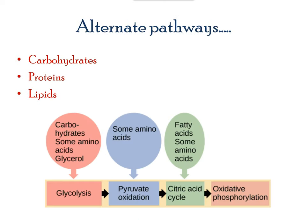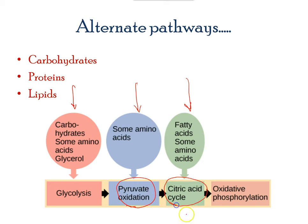Besides glucose, other organic molecules such as carbohydrates, proteins, and lipids can also enter the mainstream cellular respiration pathway. Some amino acids can convert directly into pyruvate, and lipids can directly enter the citric acid cycle, also known as the Krebs cycle.